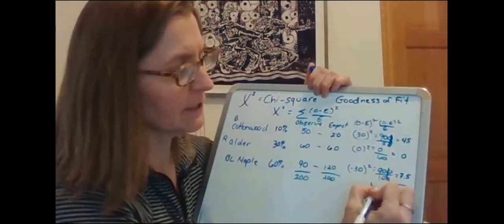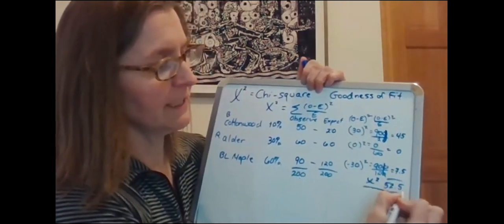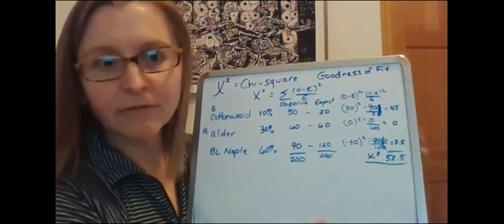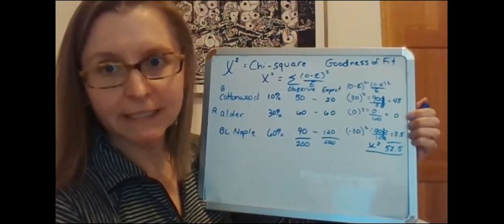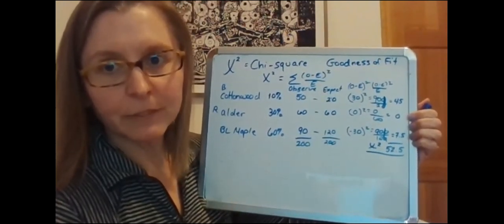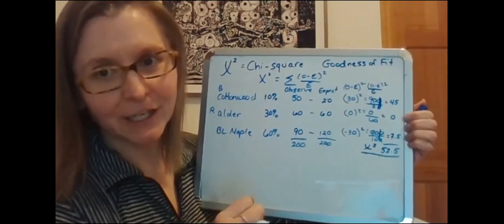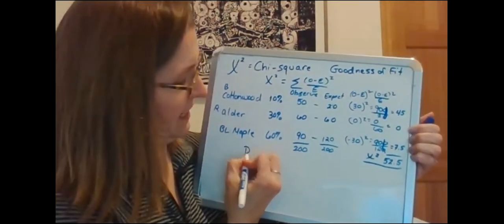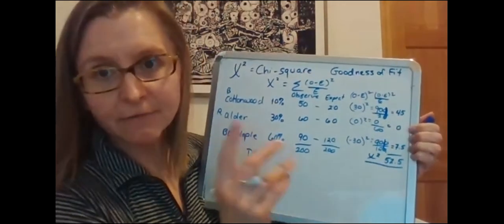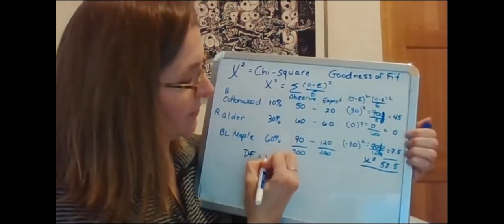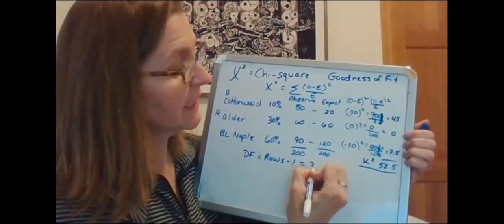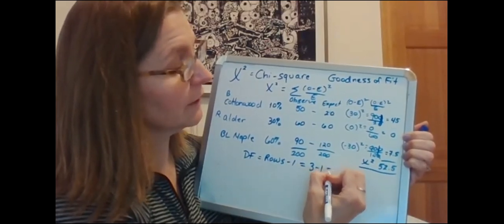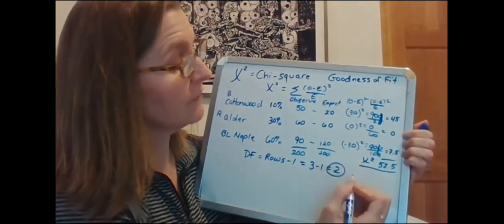So that's my chi-squared value. That's what we call the test statistic. Now I need to figure out if this is a significant result by looking at a probability table. I'll pull up a table in just a minute but the first thing I need to know is my degrees of freedom. In the chi-squared test for goodness of fit it's the number of rows minus one, which in this case equals three minus one which equals two. So I have two degrees of freedom.